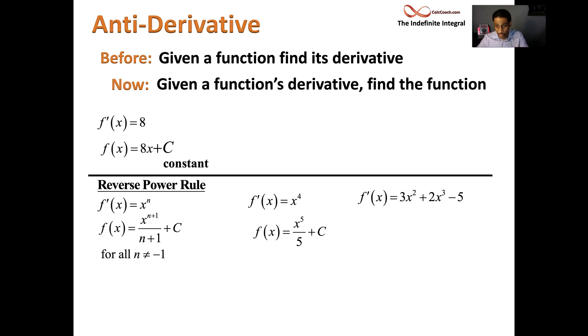So the function that has 3x squared as its derivative is x cubed over 3. Those 3's actually cancel. 2x cubed, 2x fourth over 4. The 2 and the 4 can't cancel, but you know, the 2 can cancel. And then minus 5x plus a constant.